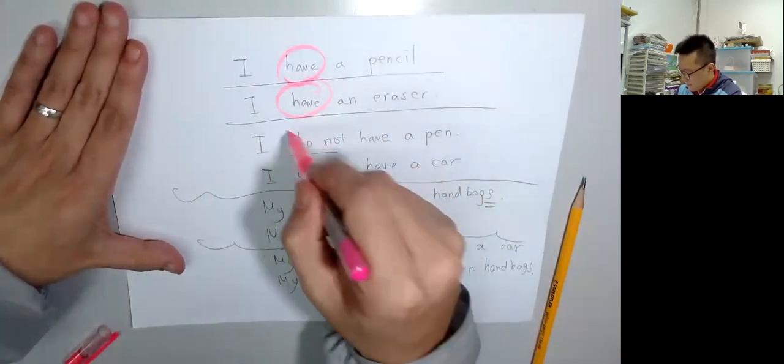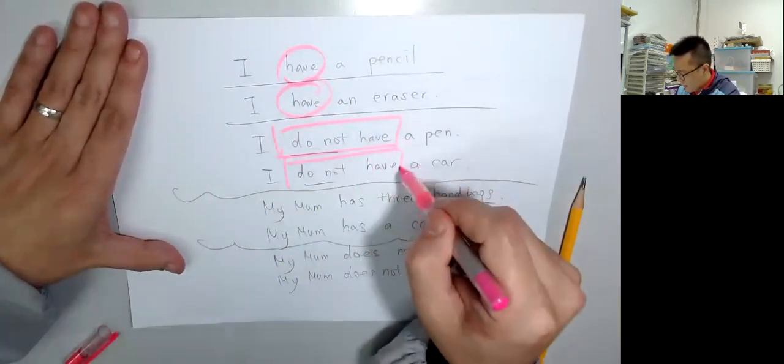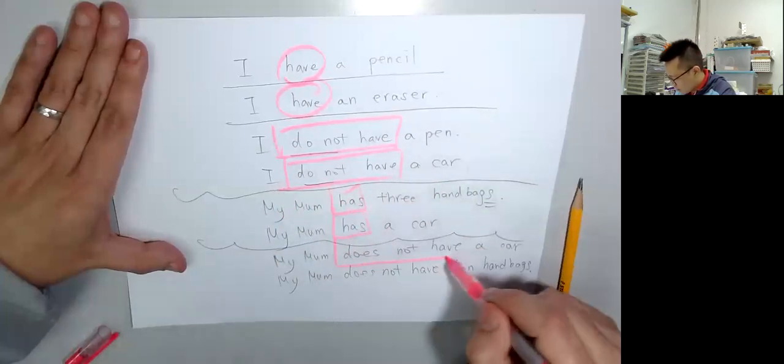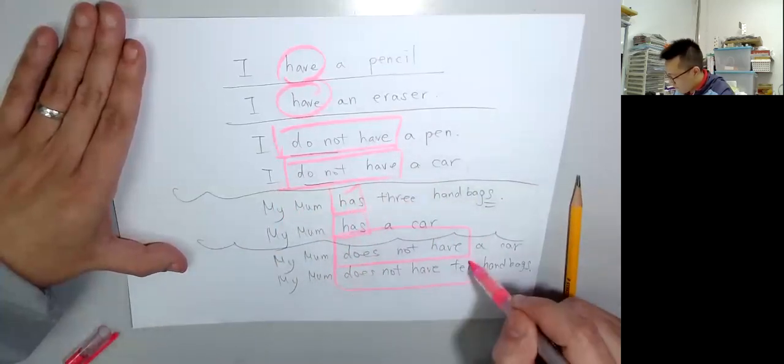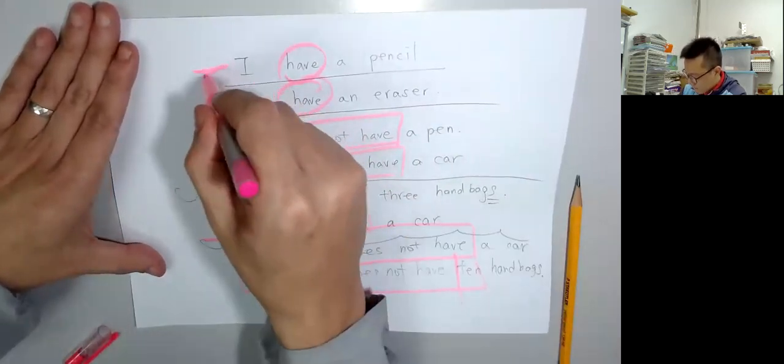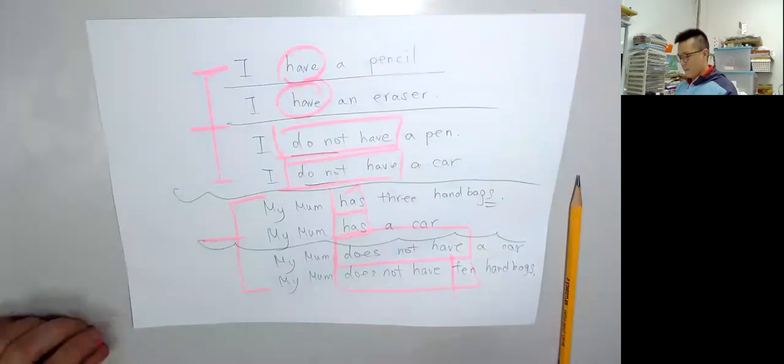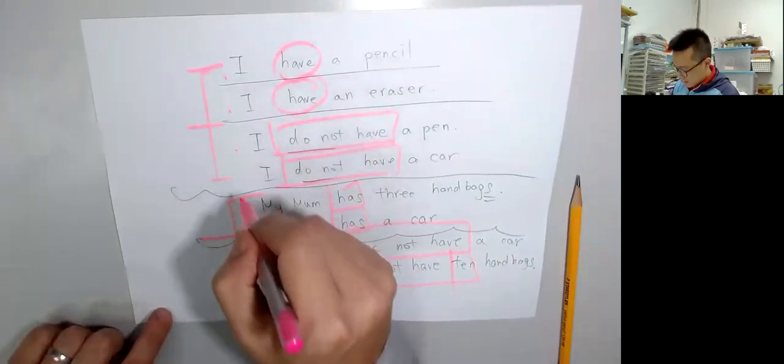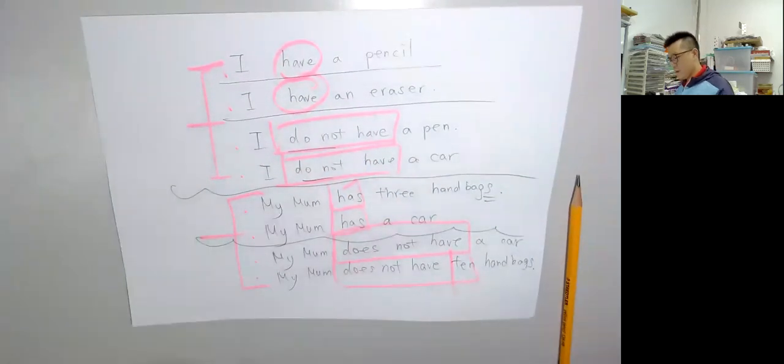Have, have, do not have, do not have, has, has, does not have, does not have. One, two, three, four, five, six, seven, eight. There are eight sentences here.